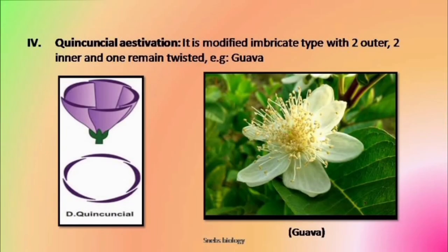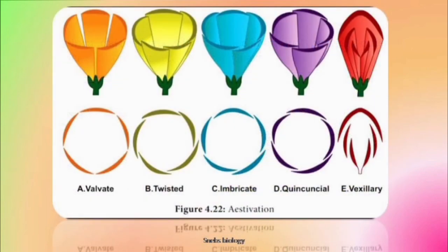The fourth type is quincuncial aestivation. In quincuncial aestivation, two are in, two are out, and one is in and out. This arrangement is seen in Ranunculus, Guava, etc. As mentioned earlier, these arrangements are common for both sepals and petals — they are arranged in a circular manner which we call a whorl.